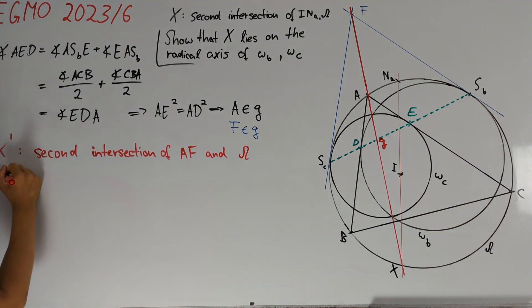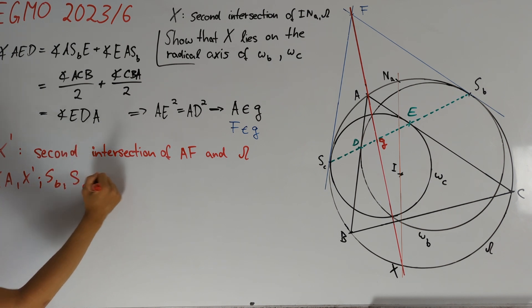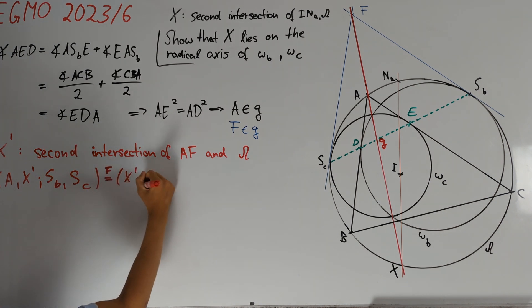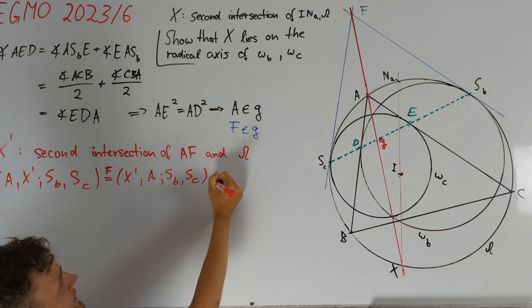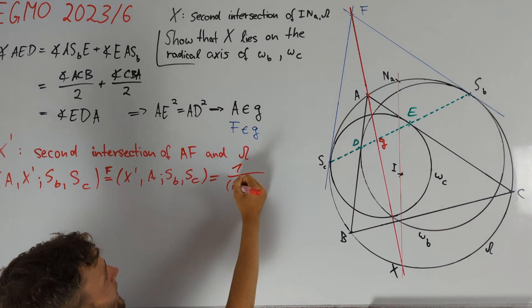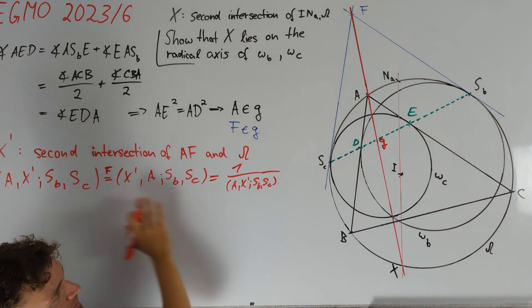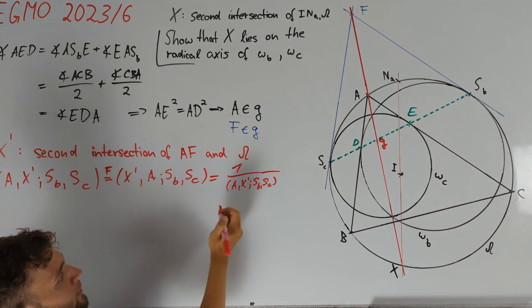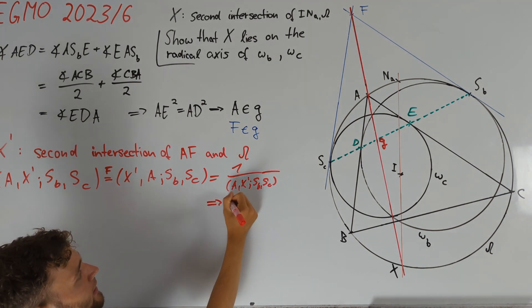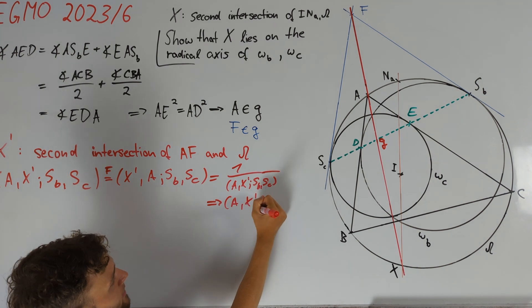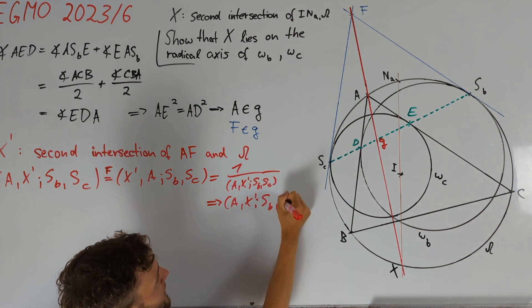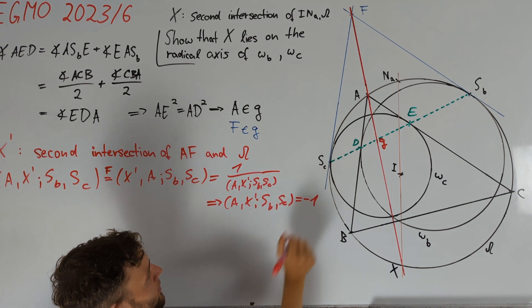We can give a proof of this using a projective transformation at F. Namely, we have that the cross ratio A, X prime, SB, SC equals X prime A, SB, SC. And since only the first two terms are flipped, this is just the inverse of A, X prime, SB, SC. Since the four points are distinct, this cross ratio doesn't equal 1. And we can conclude that indeed A, X prime, SB, SC is equal to minus 1. And so, the two pairs are harmonic.